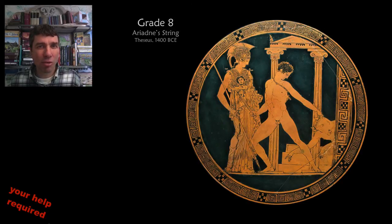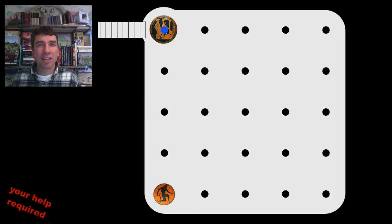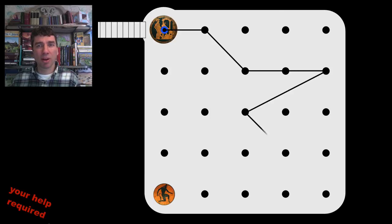Ariadne's string is a great problem to give your students practice with Pythagoras. Theseus starts in the upper left. He has to wind his way through this colonnade, taking increasingly large steps with each move, and end up at the Minotaur in the bottom left. Let's see how it might work.